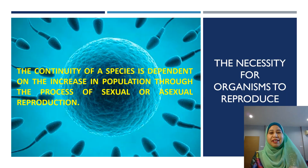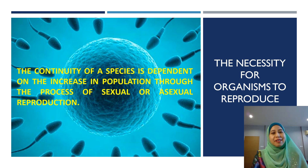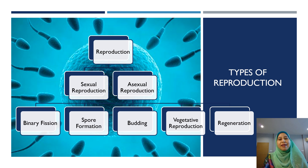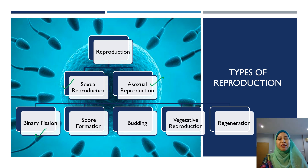Why is it necessary for organisms to reproduce? It is for the continuation of the species. Species is dependent on the increase in population through the process of sexual or asexual reproduction. Reproduction can be divided into two: sexual reproduction and asexual reproduction. Asexual reproduction can be further divided into binary fission, spore formation, budding, vegetative reproduction, and regeneration.